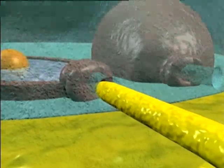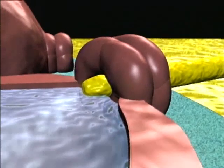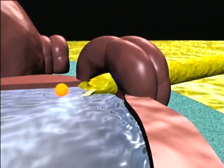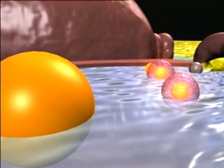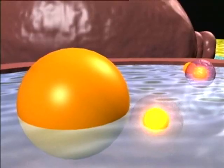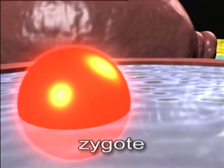Reaching the archegonium, the tip of the pollen tube forces itself between the neck cells and into the egg. The tube nucleus, two sperm cells, and the sterile cell are now released into the egg cytoplasm. One sperm nucleus fuses with the egg nucleus to create a diploid zygote.